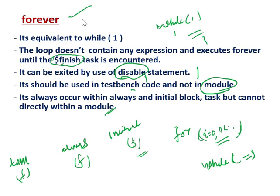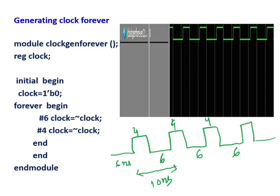This is one example of generating a clock using the forever loop. So how do you generate a clock? This is a clock signal.